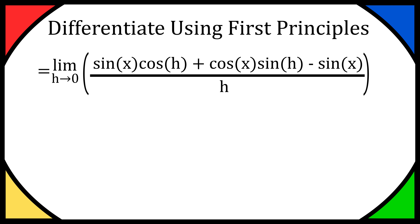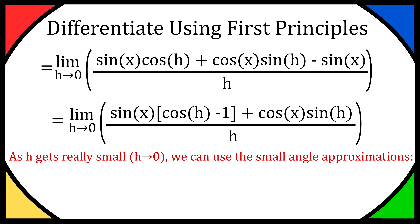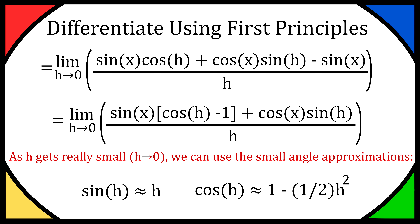Next, group together the sine(x) terms. We have sine(x) multiplying cos(h) and a minus sine(x) on the right, so factoring out sine(x) leaves sine(x) times (cos(h) minus 1), plus cos(x)sine(h), all over h. As h tends to 0, we can use small angle approximations: sine(h) ≈ h and cos(h) ≈ 1 minus a half h squared. Substituting: sine(h) becomes h on the right, and cos(h) becomes 1 minus half h squared. In the bracket multiplying sine(x), we get (1 minus half h squared minus 1), so the 1s cancel, leaving minus half h squared times sine(x).